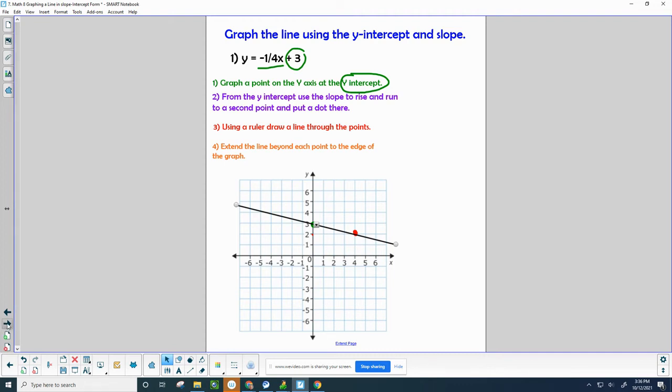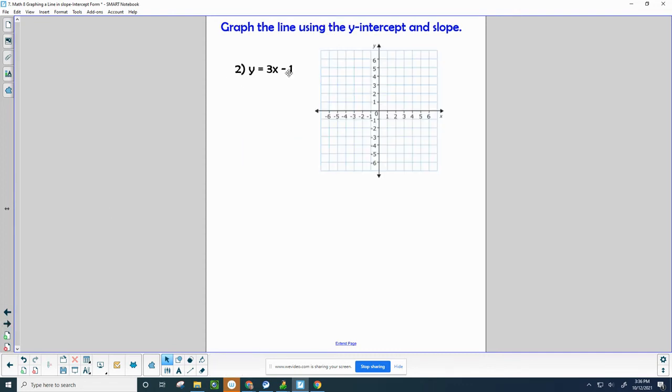I want to extend it in both directions, and that's what we want you to do on your page is extend it in both directions so it goes off the edge of the page. So there's the line, y equals negative one-fourth x plus three. So maybe that was a little new to you, a little strange, so let's try another one. This one is y equals three x minus one. Now before we graph this, I want to mention that this slope of three here is actually three over one.